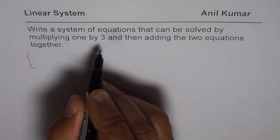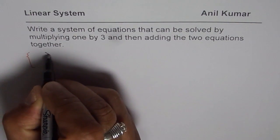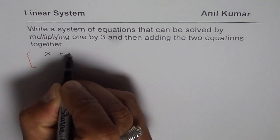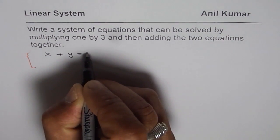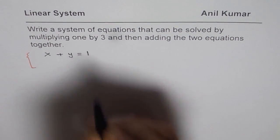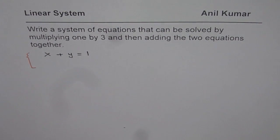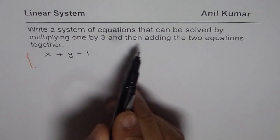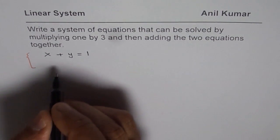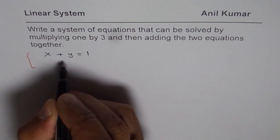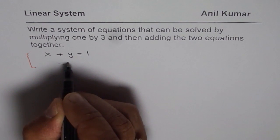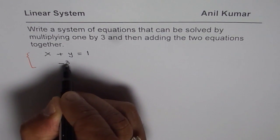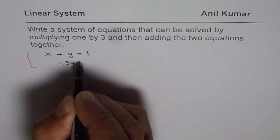Let us think about a question. To be very simple, let us say x plus y equals 1. Let this be one of the equations. Since we need to multiply one of the equations by 3 and then add, we will prefer to use negative here so that it cancels this coefficient and we will write 3y.